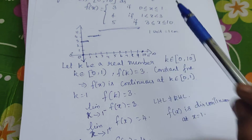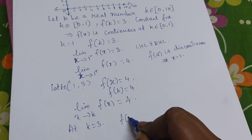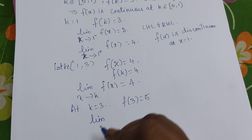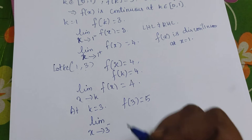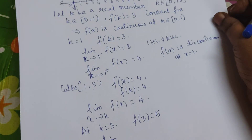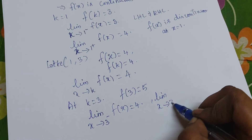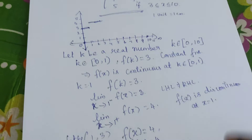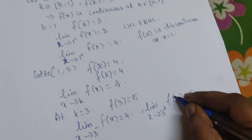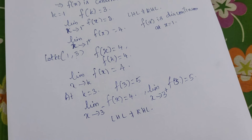Now we check continuity at k = 3. At k = 3, the function value f(3) = 5. The left-hand limit as x approaches 3 gives 4, since in the left-hand neighborhood the function is 4. The right-hand limit as x approaches 3 gives 5, since in the right-hand neighborhood the function is 5. Since left-hand limit ≠ right-hand limit, the function is discontinuous at k = 3.